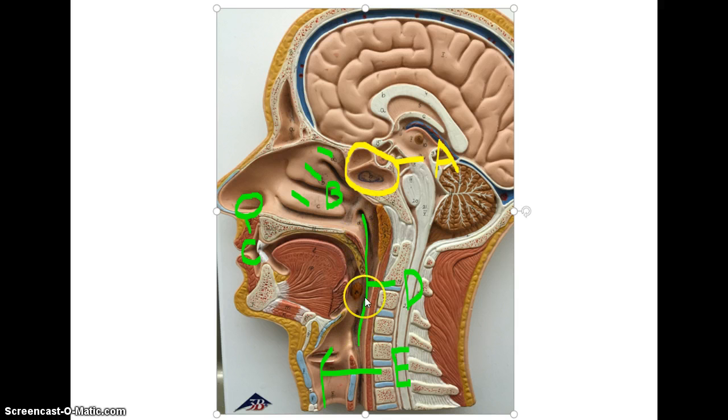This is the pharynx, as you've learned before, and this is the larynx, which we'll look at in more detail. So again, sinuses here and here, nasal conchy here, external nares, pharynx, and larynx.